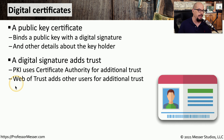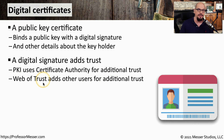There are other ways to associate trust with these digital certificates. One way would be through a web of trust. If you don't have a central certificate authority, then it's up to the users of these certificates to vouch for each other and digitally sign each other's certificates.